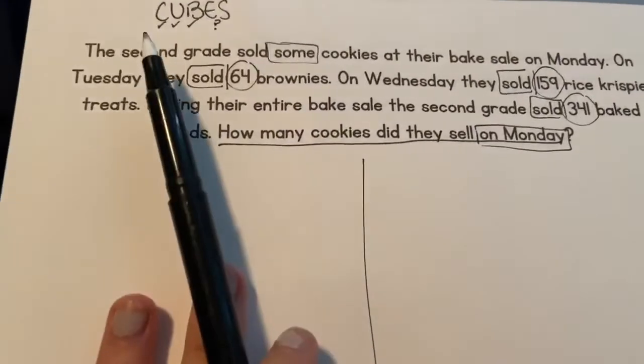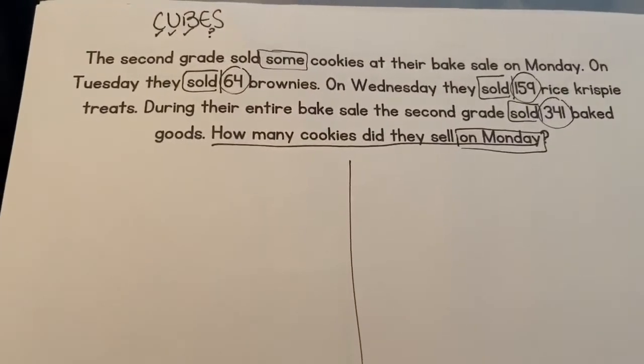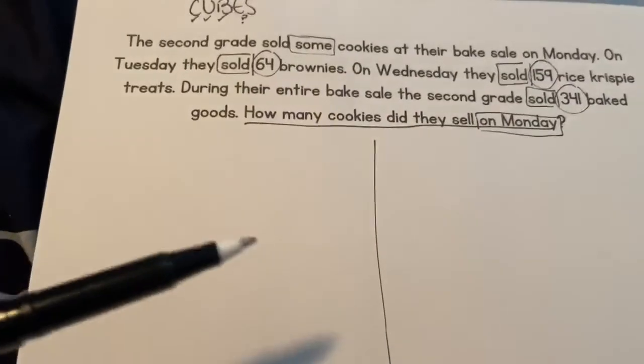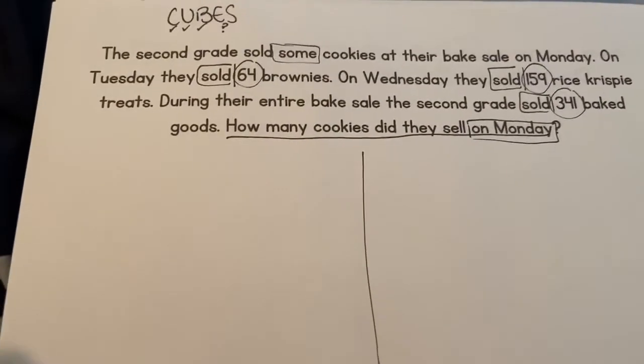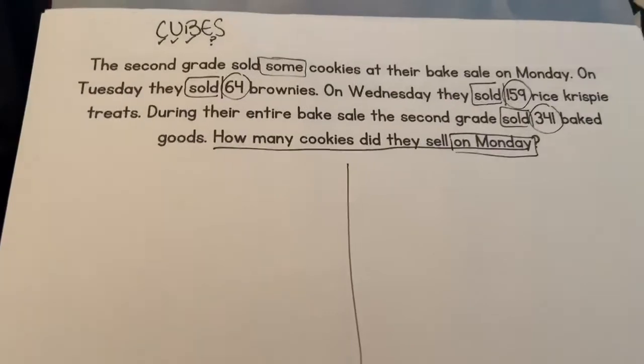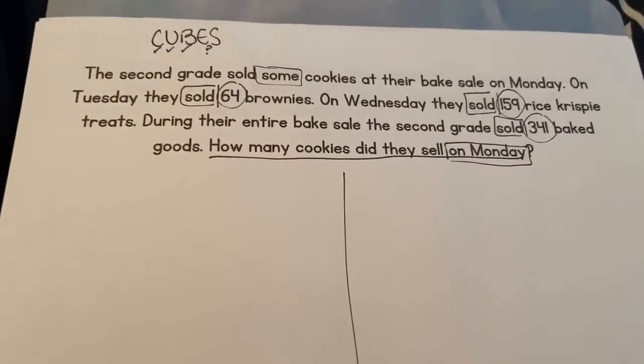So we have to now figure out how many they sold on Monday. So go ahead and show me two different ways. Think carefully about what you could do with the numbers that you have and what you're missing. Pause the video, go ahead and do it and come back when you're ready.